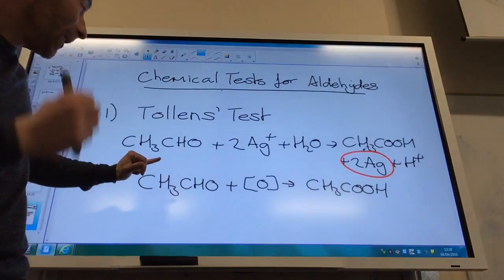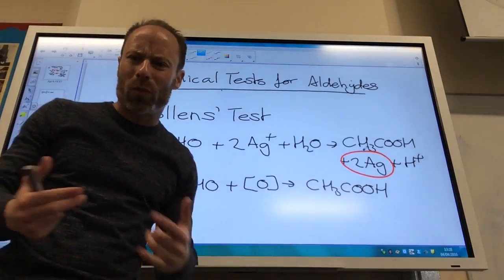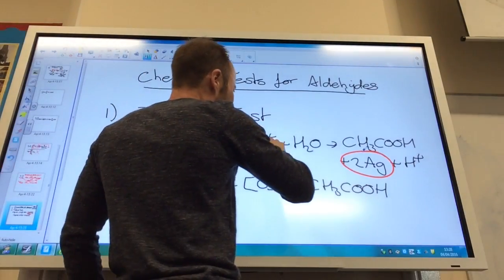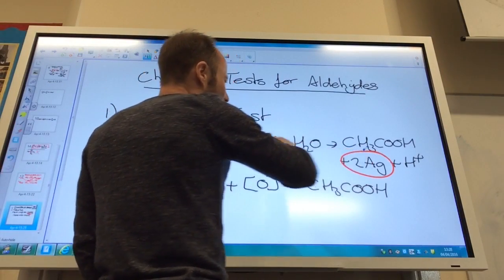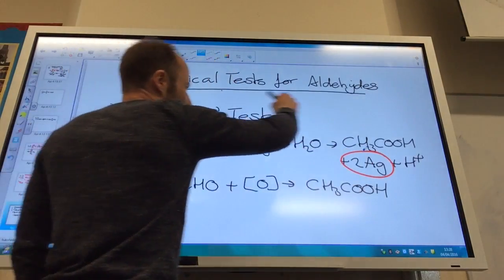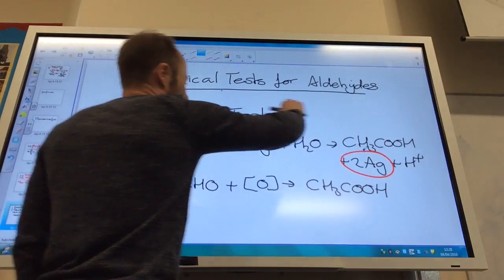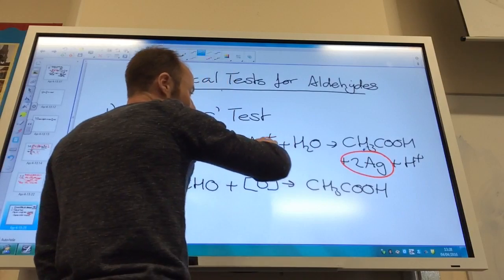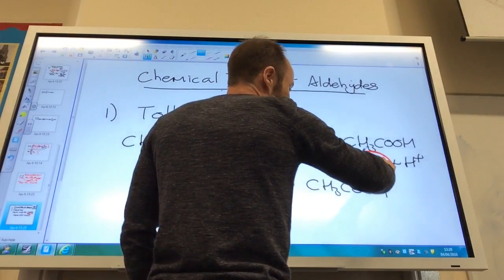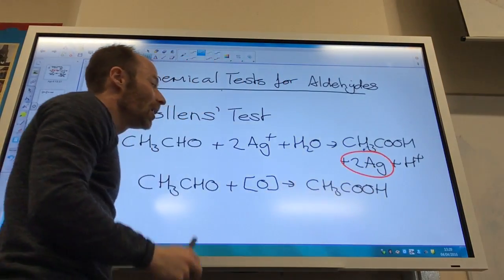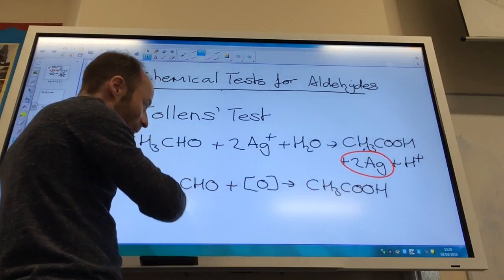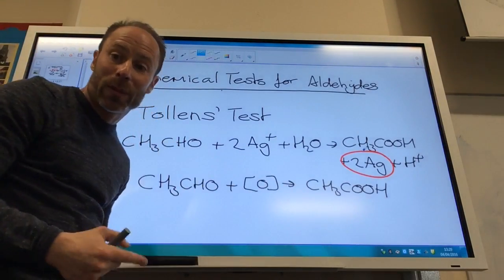Now you can simplify this. This shows you how the potassium dichromate works. You can see that this silver is actually being reduced. The aldehyde is being oxidized to a carboxylic acid. The silver is being reduced from plus one to zero as silver metal here. So this is showing the oxidation in this equation, the equation which we use for potassium dichromate.